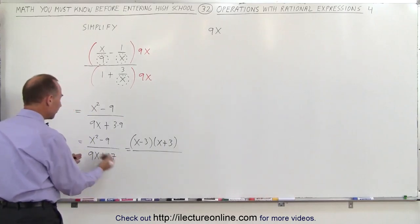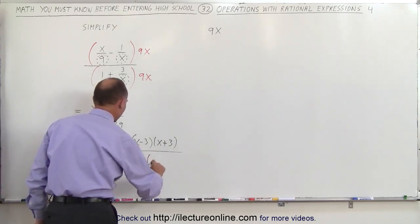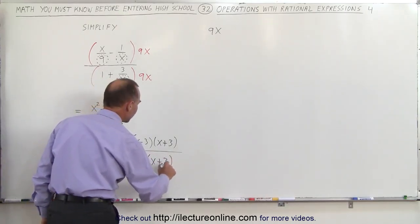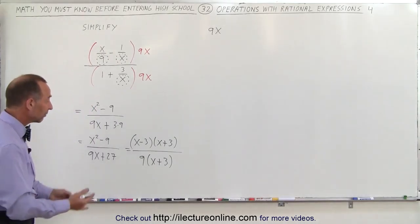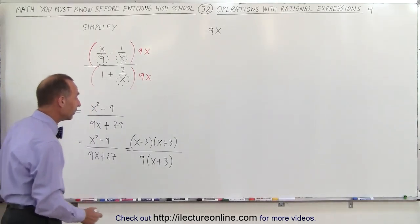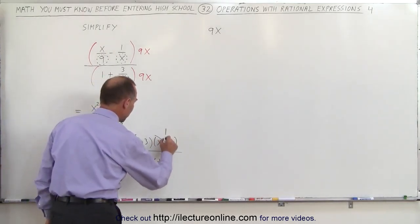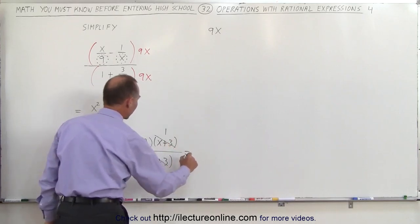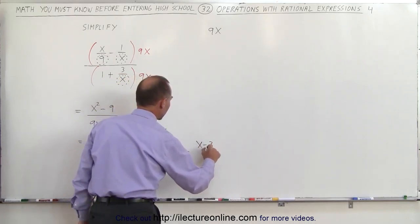And in the denominator, we can factor out a 9 and we're left with x plus 3. And now we can have some fun. We can simplify by cancelling out. Here we have the x plus 3 and the x plus 3 and we're left with an x minus 3 divided by 9.